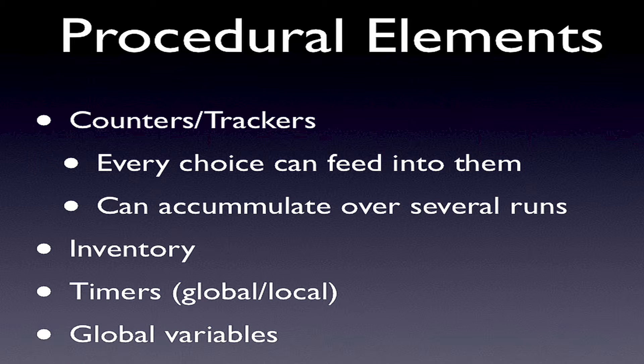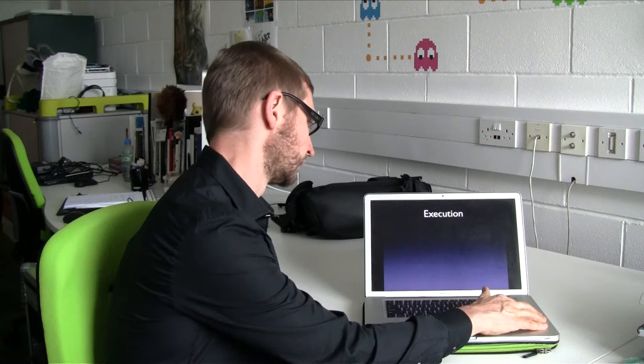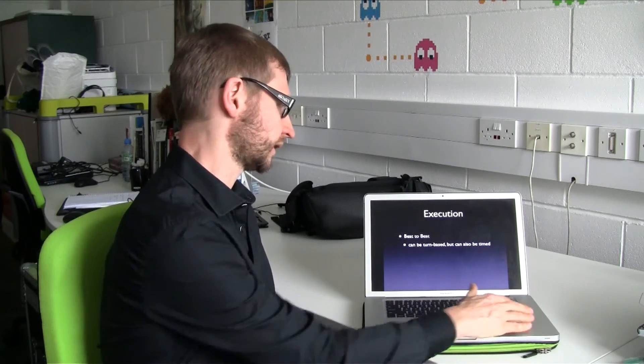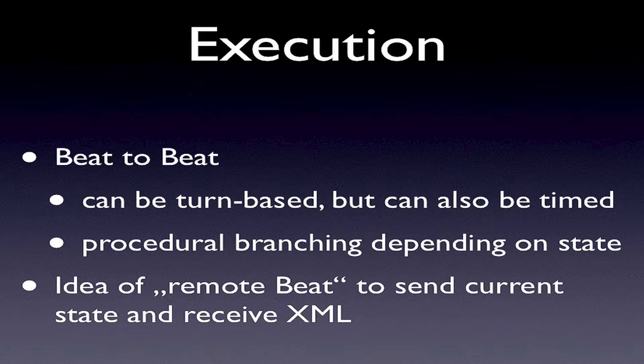There are also global variables, which you can use for memorizing where certain events have happened. The execution of the system is from bead to bead and can be turn-based, waiting for the user at every turning point, but it can also be time-based and run on its own. Branching is procedural, meaning it can branch depending on the state of the overall experience.